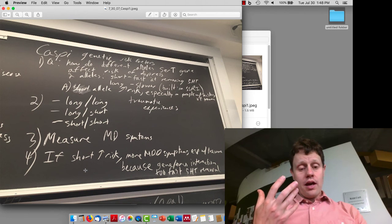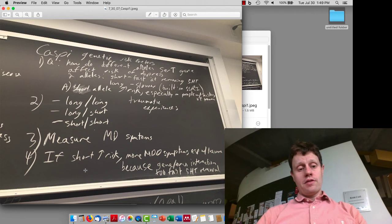What they found is that having one or two short alleles, especially when there is a history of stress in somebody's life, leads to an increase in risk of major depressive disorder.